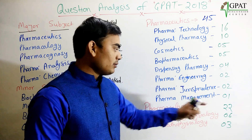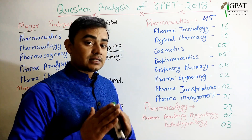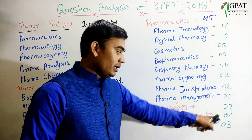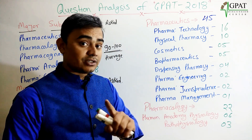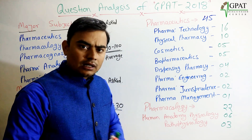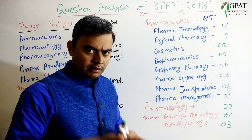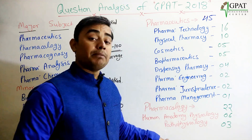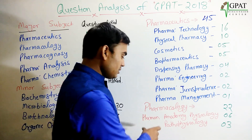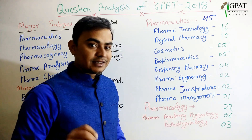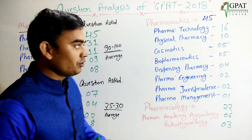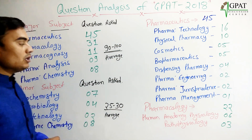From pharmacology, 22 questions were asked from the whole pharmacology subject. Human anatomy and physiology: 6 questions. From the last 2 to 3 years, not only pharmacology but also human anatomy, physiology, and pathophysiology are very important because some questions are asked from these topics. Pathophysiology: 3 questions asked in the GPAT 2018 exam.